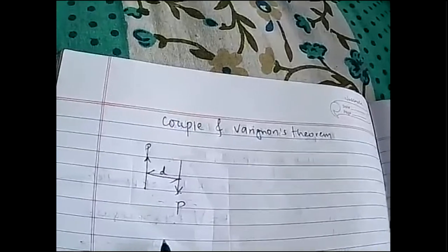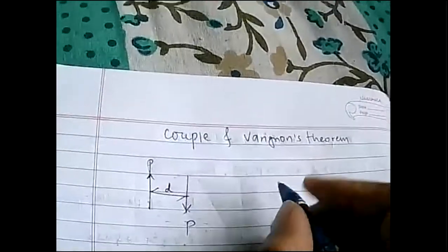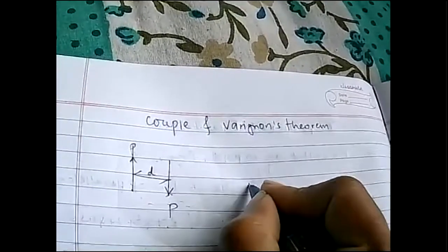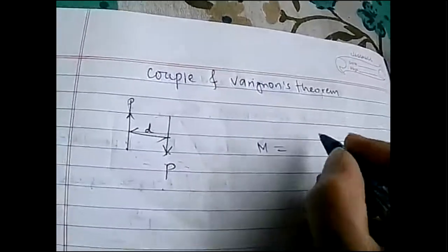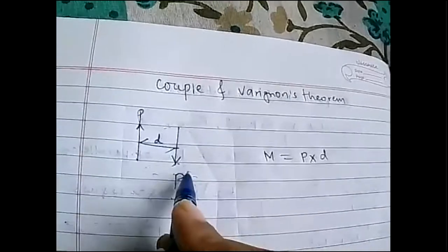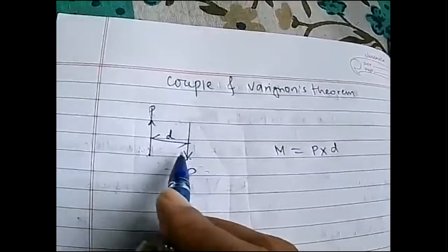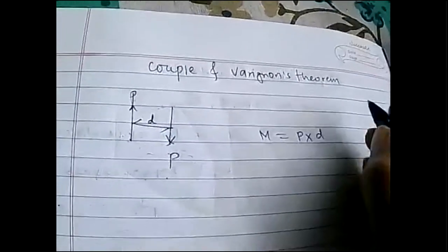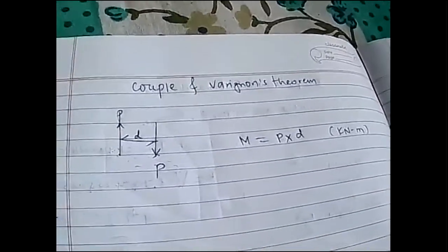The distance between these two forces is called the arm or lever of a couple. The magnitude of a couple — it is one kind of moment actually — is equal to p into d. We take one of the forces and multiply it with the distance, so the unit will be kilonewton meter, as you know the unit of moment.